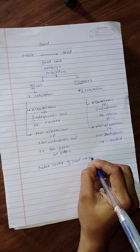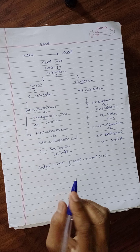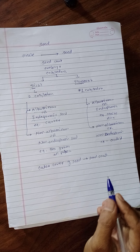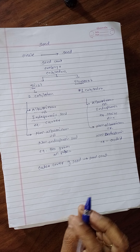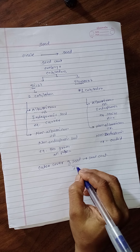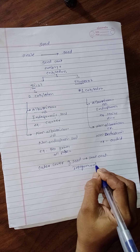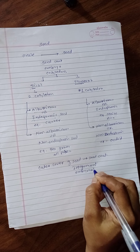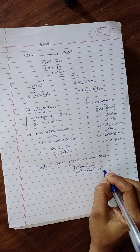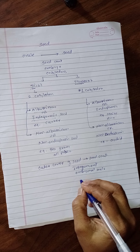The outer cover of seed is known as seed coat. It may be one or two layers — monocot or dicot. Then the integument, and the embryonal axis — that is the epicotyl or hypocotyl.